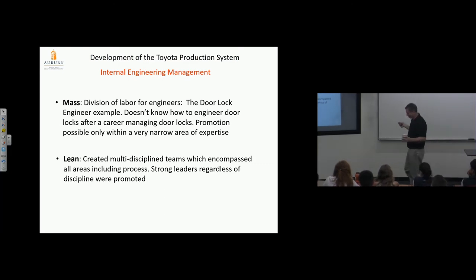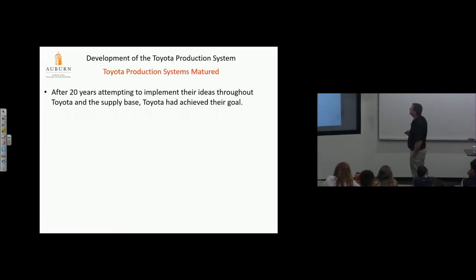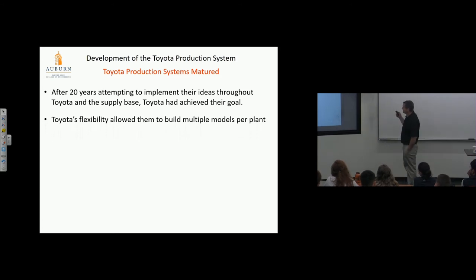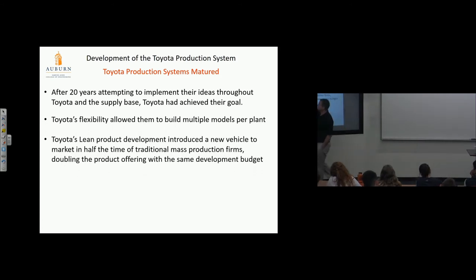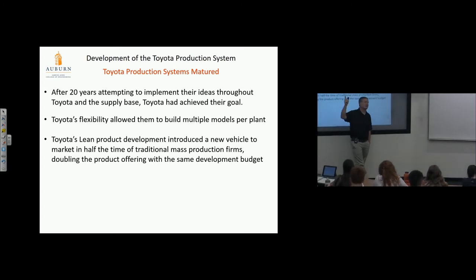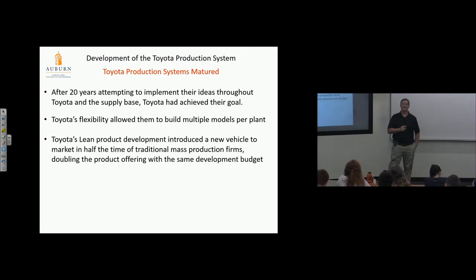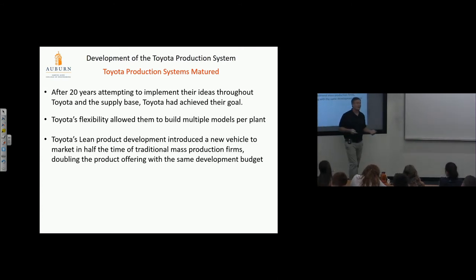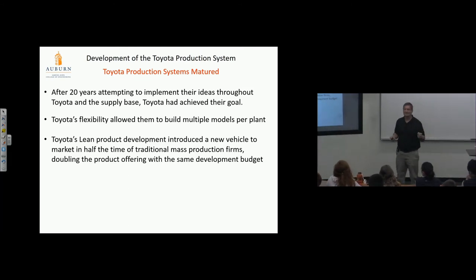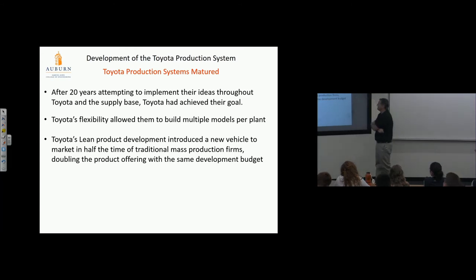Toyota Production System matured after 20 years of attempting to implement their ideas throughout Toyota and the supply base. Toyota achieved their goal—they're a legitimate company, they put their system in place, they could compete. Toyota's flexibility allowed them to build multiple models per plant. That's a huge issue—flexibility is key. I can build anything you want next cycle on the machine. That's ideal—remember, that's being like God. They're so close to that, and mass is so far from that. That flexibility is great. If I can build multiple models in an assembly plant, that gives me a competitive advantage over Ford or GM that can only build one model. Toyota's lean product development introduced a new vehicle to market in half the time of traditional mass production firms, doubling the product offering with the same development budget.